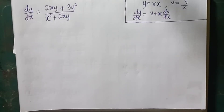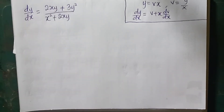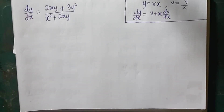Hello, good day viewers. This is the continuation of our previous lesson on how to solve a homogeneous differential equation. I have another example here, which is dy over dx is equal to 2xy plus 3y squared divided by x squared plus 2xy.